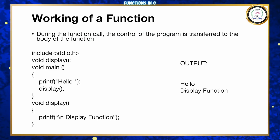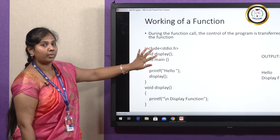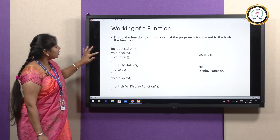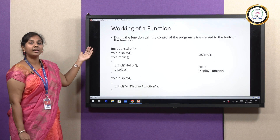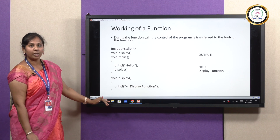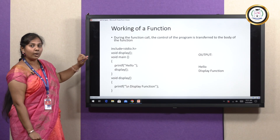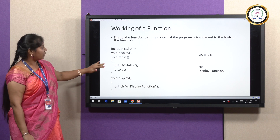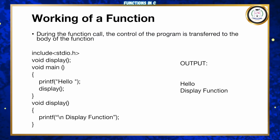Consider this example to understand how a function works. Here, I have included stdio.h and defined a user-defined function called void display. The return type is void and there are no arguments passed to it. This particular line is the function declaration — its purpose is to inform the compiler that there is a function called display defined in this program. After the function declaration, I have the main function with just one printf statement printing 'hello', and then a call to the user-defined function display.